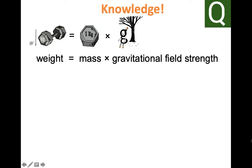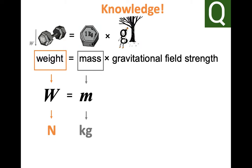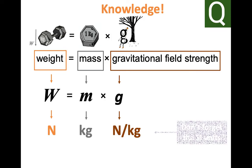You should be able to recall this equation as well as be confident to rearrange it for your GCSE physics. Weight is measured in newtons, mass is measured in kilograms, and gravitational field strength is in newtons per kilogram.